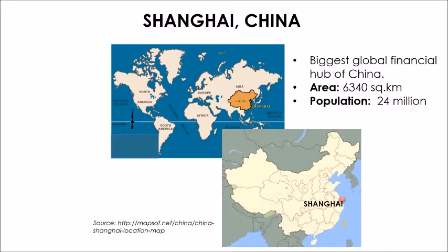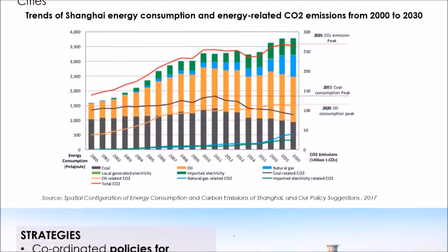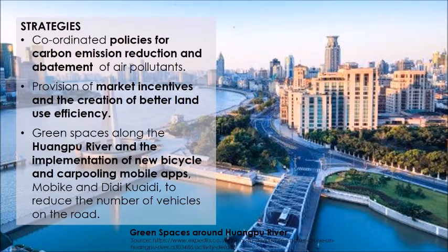Shanghai is the biggest global financial hub of China, with a population of 24 million and an area of about 6,340 square kilometers. The challenge was that industry and power sectors dominate carbon dioxide emissions per capita. Strategies included coordinated policies for carbon emission reduction, market incentives, better land use efficiency, bicycling cycle tracks, carpooling mobile apps, and green spaces along the rivers.